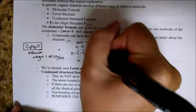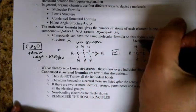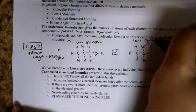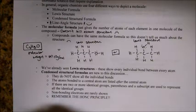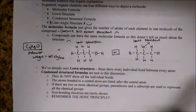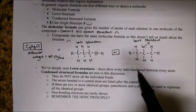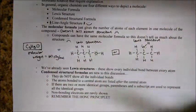We've already seen Lewis structures, and that's what we drew here. In Lewis structures, we have every single bond and every single atom involved in our drawing. This definitely relates to structure because it is a Lewis structure, but none of this is implied in the original molecular formula.